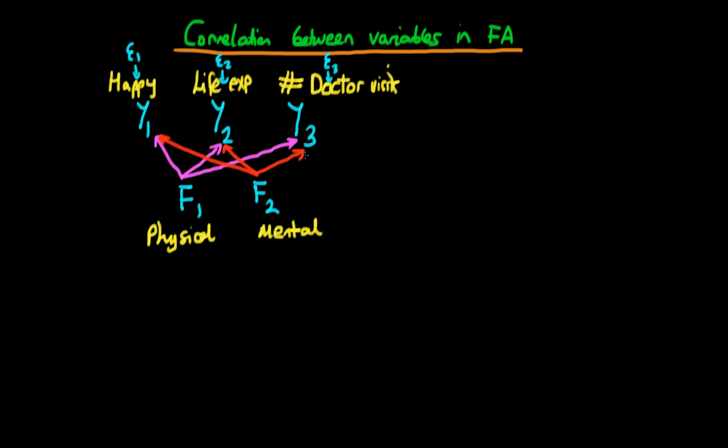The model which we've come up with is we suppose that there are two underlying factors which determine these three observables, one of them being an individual's physical health and the other one being an individual's mental health. The idea is that these two unseen and unobserved factors load to different degrees on each of these observed factors.